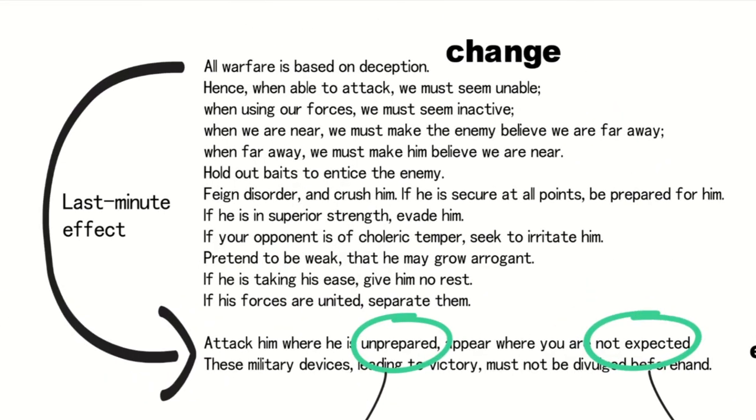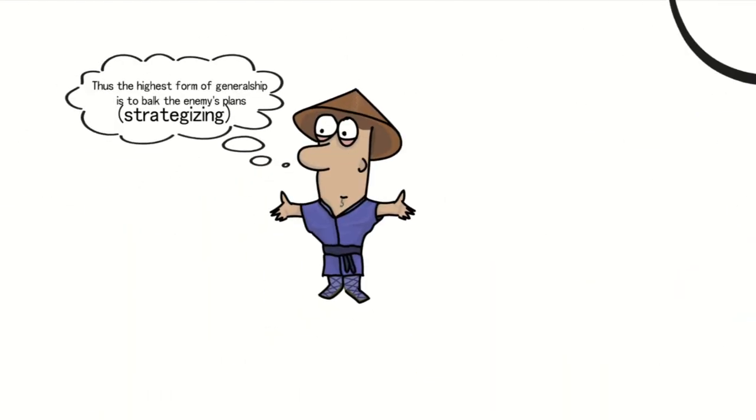Sun Tzu's famous quote extends seamlessly from all warfare is based on deception, to these military devices, leading to victory, must not be divulged beforehand. This continuity underscores a pivotal concept: change, which is brilliantly emphasized. Sun Tzu's deception not only guides the fundamental principles of warfare at the strategic level but also provides specific methods for employing this deception at the tactical level, totaling 12 strategies.